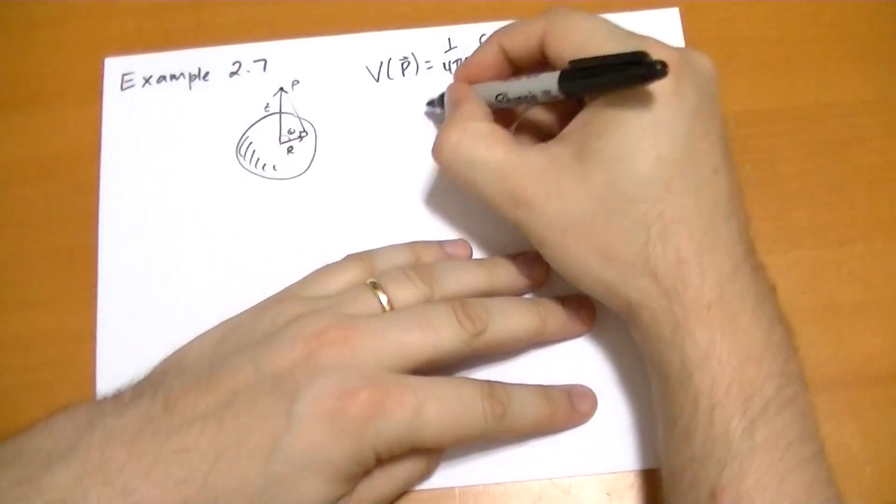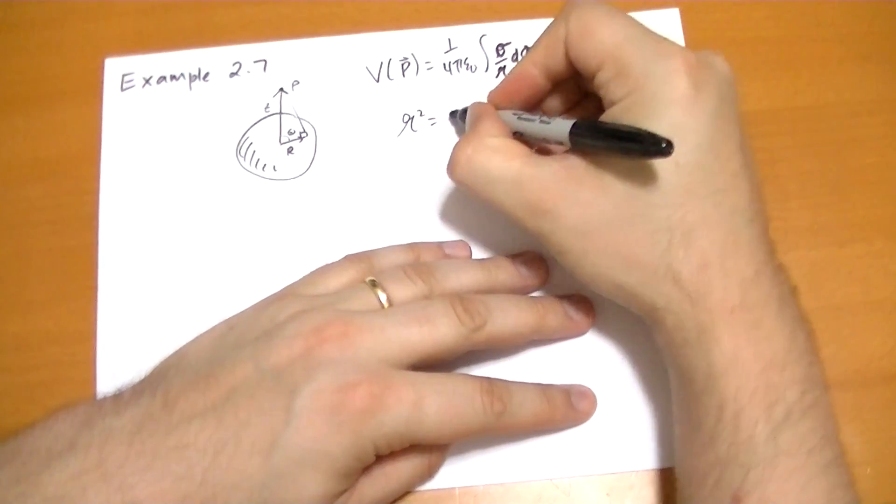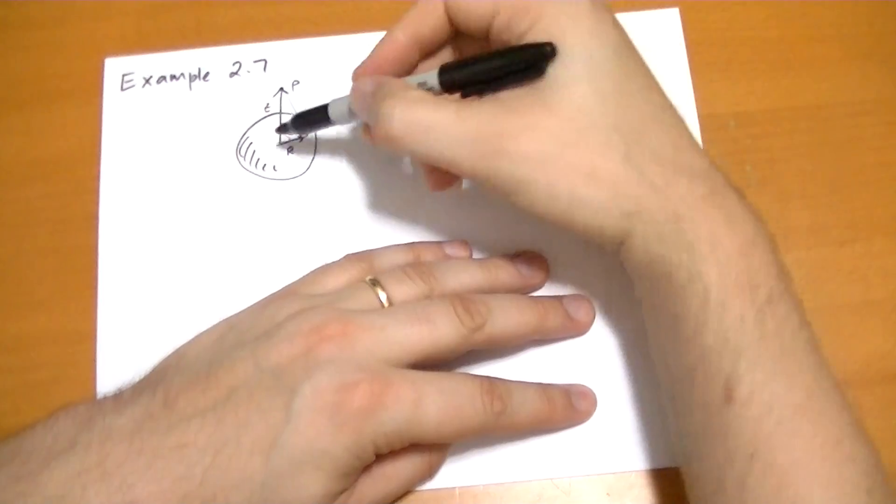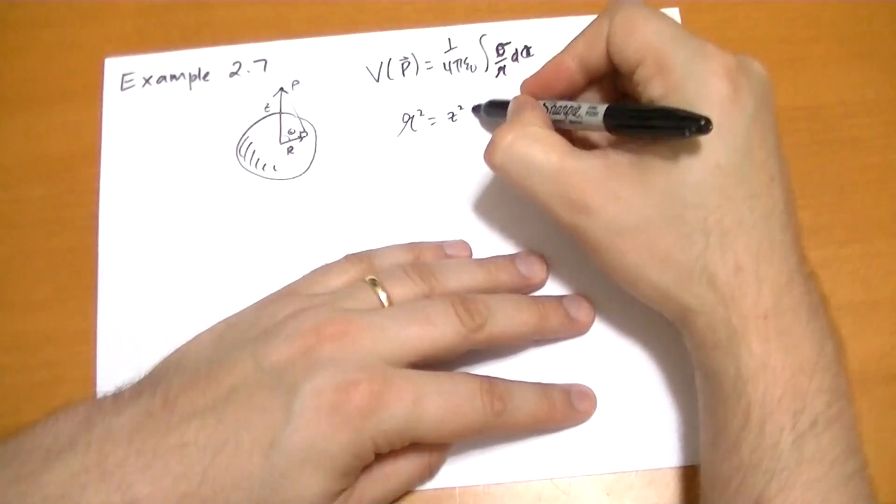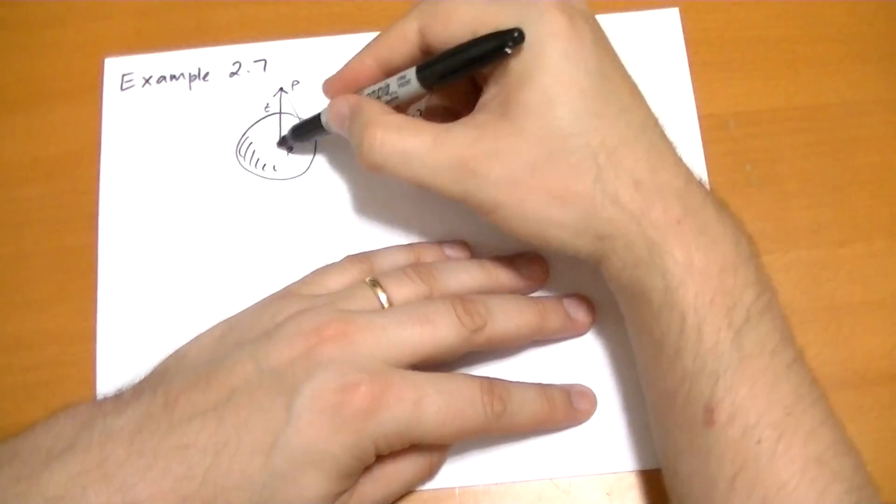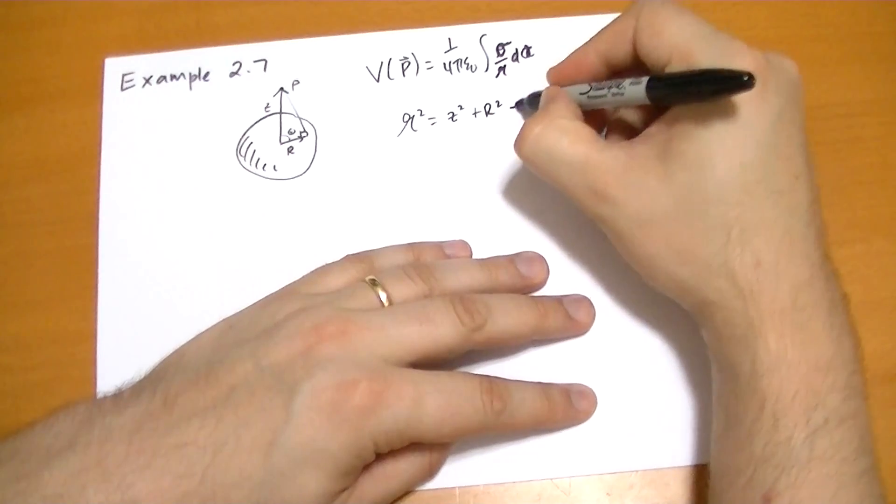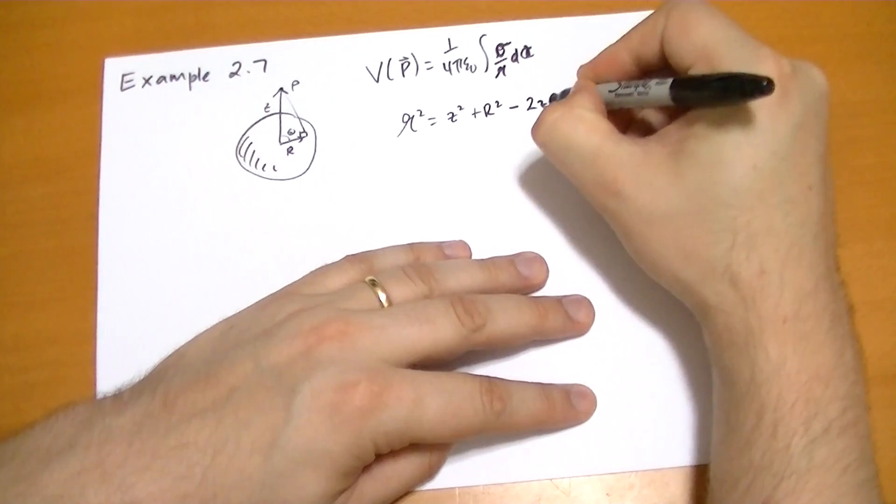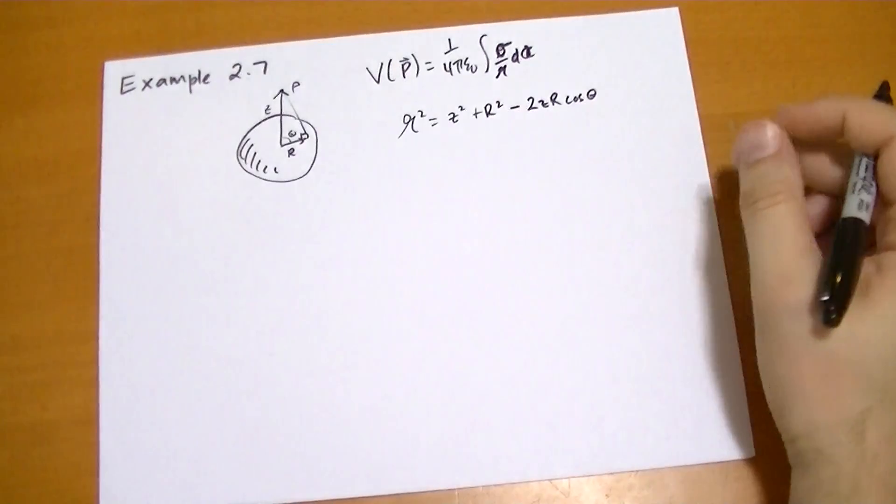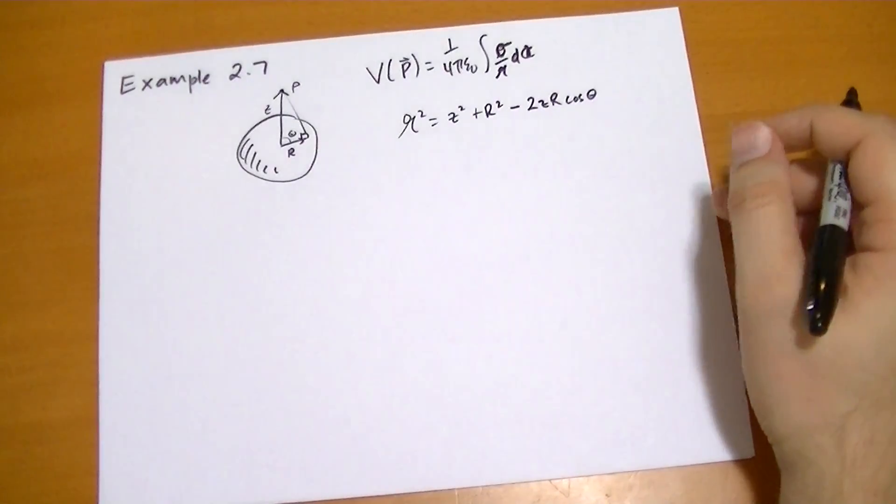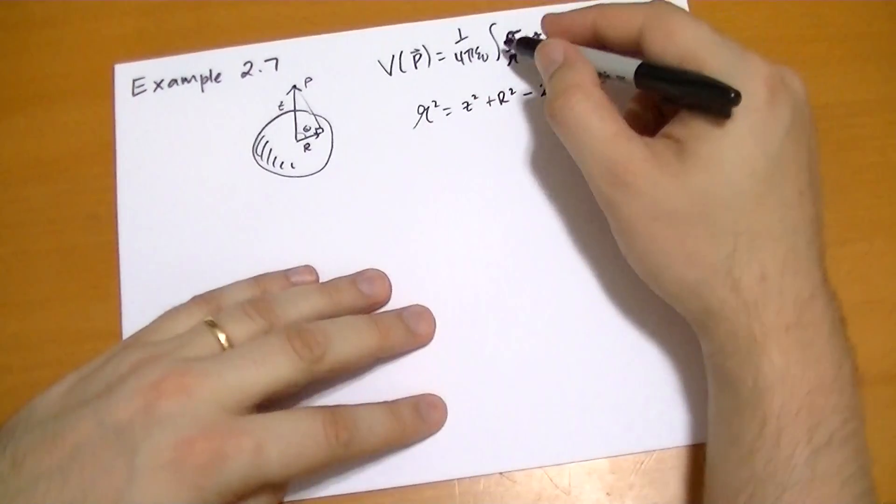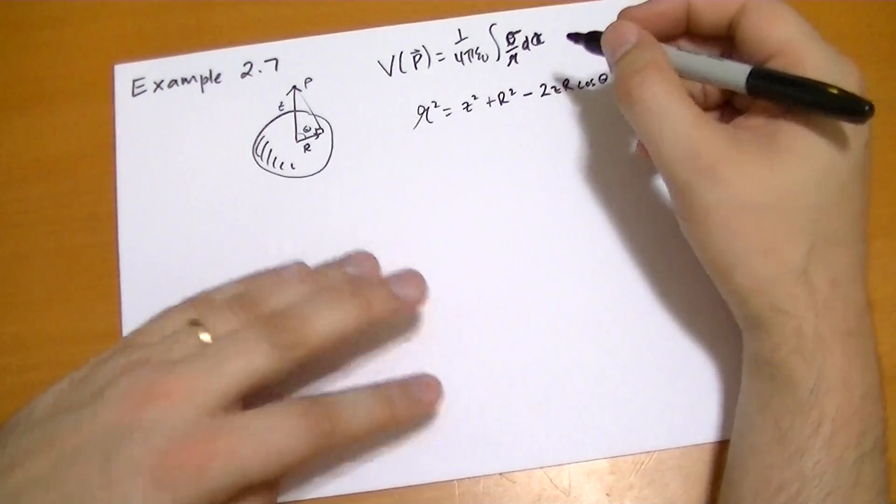So r squared. What is r? Using the law of cosines, r squared is basically equal to z squared, which is this distance here, plus r squared, which is the distance to that surface, minus 2zr cos theta.